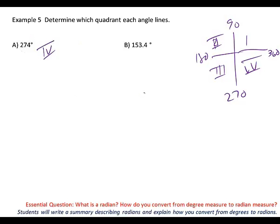This seems like really simple stuff, but it's really important that you understand this for getting into what we're going to do next. That's why they're doing these intro lessons. 153 is going to land in which quadrant? 2. Good.